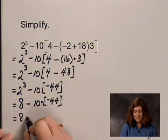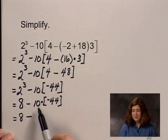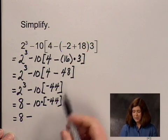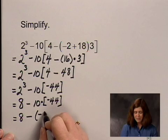So I have 8 minus 10 times negative 44, which is negative 440.